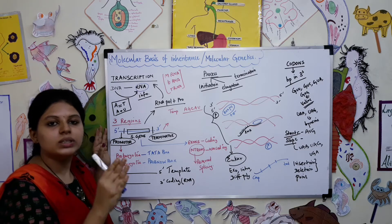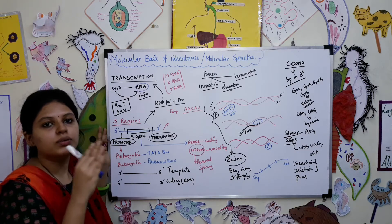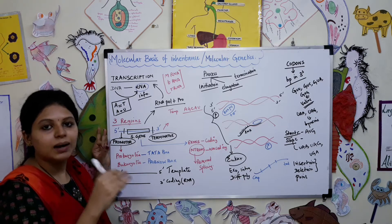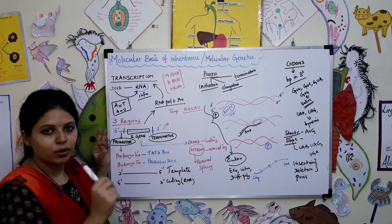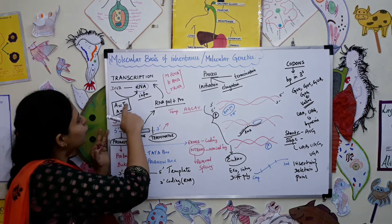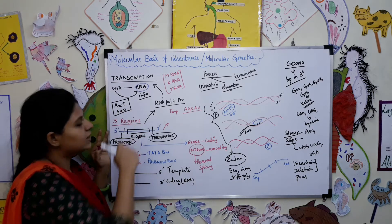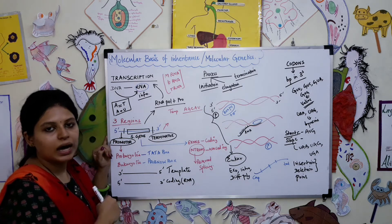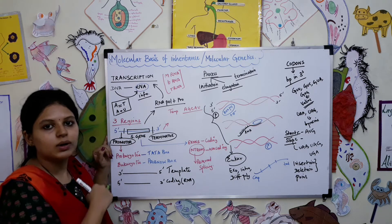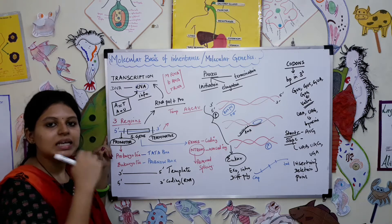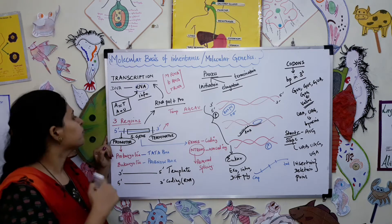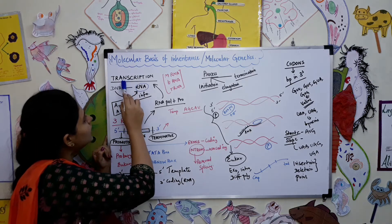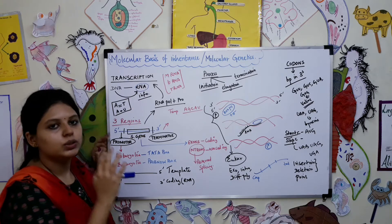The only difference is that in DNA, adenine pairs with thymine via a double hydrogen bond, but in RNA there is uracil instead of thymine. So that is the only difference in case of coding in RNA.